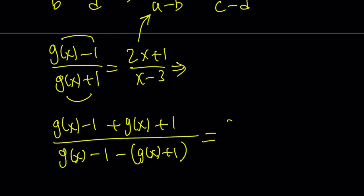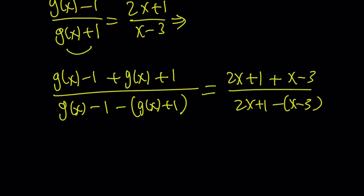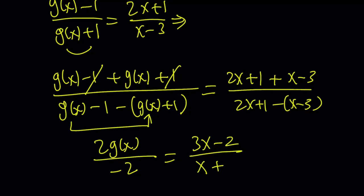That should equal c plus d divided by c minus d. This might look complicated at first. But once you get the hang of it, it's going to be real easy. And the cool thing about that is this gives you g(x) directly. Negative 1 and positive 1 cancels out. We end up with 2 g(x) on top. At the bottom, we're going to get negative 2. And on the right-hand side, we're going to get 3x minus 2 divided by x plus 4.